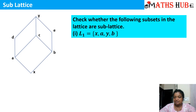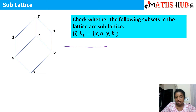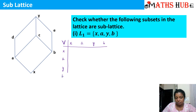The first subset given to us is L1, and the elements in that subset are x, a, y, and b. To check whether it is a sub-lattice, we will prepare the join table first. We will write the elements x, a, y, and b in the rows as well as in the columns. It is mandatory that you put the join symbol over here.